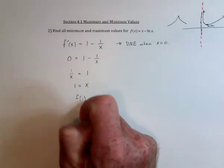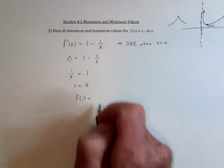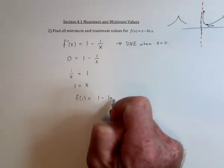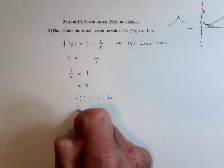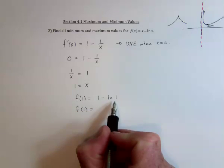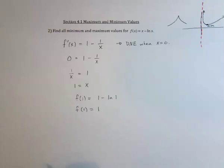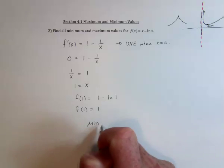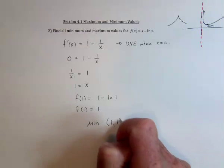And so it's going to be, well, the natural log of 1 is 0. So it's going to be 1 for x and 1 for y. And so we have a minimum at 1 comma 1.